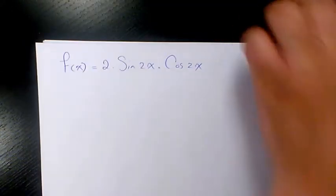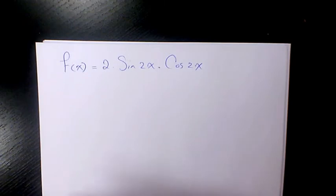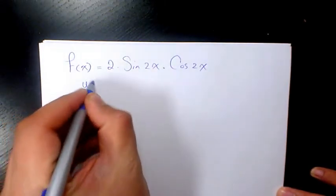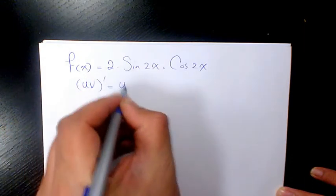So let's go back to this question. We have 2 times sine 2x times cosine 2x, so we're going to use product rule: u prime times v plus u times v prime.